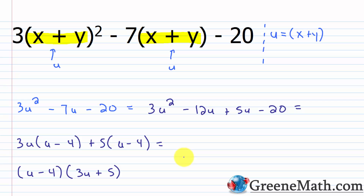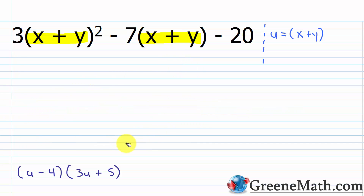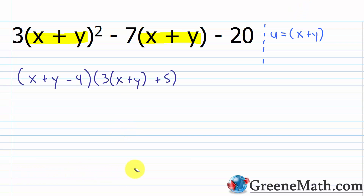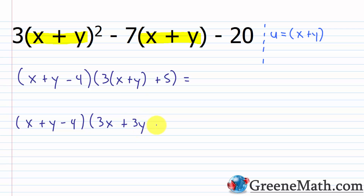I'm not done because u represents the quantity (x + y). Substituting back: the first factor becomes (x + y − 4). For the second factor, 3u becomes 3(x + y), so make sure to use parentheses: 3(x + y) plus 5. Simplifying, the final answer is (x + y − 4) times (3x + 3y + 5).